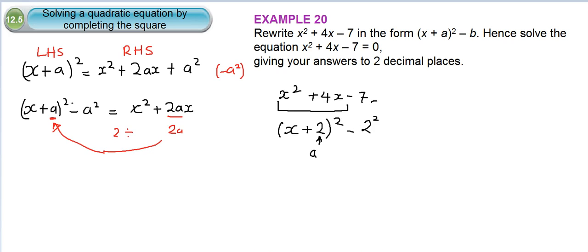Then, this 7 comes back down. So we have minus 7. Let's simplify these two expressions here. So we have x plus 2 squared minus 2 squared is 4 minus 7. So that gives us x plus 2 squared minus 11.